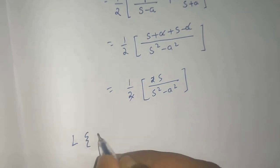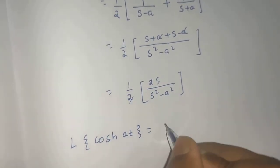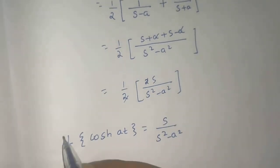So you are finally getting that Laplace of cosh of at is given by s divided by s squared minus a squared.